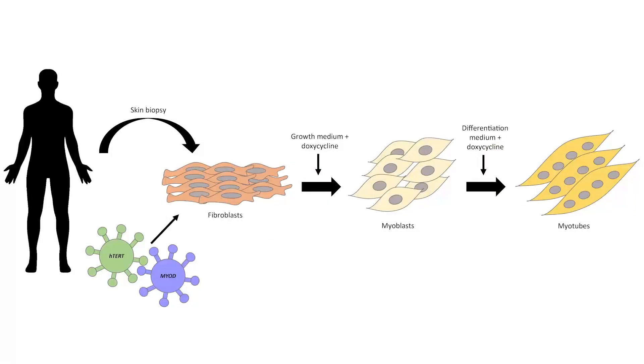Next, the medium is switched to a differentiation medium, also supplemented with doxycycline. Then the myoblasts fuse with each other, forming multinucleated myotubes.